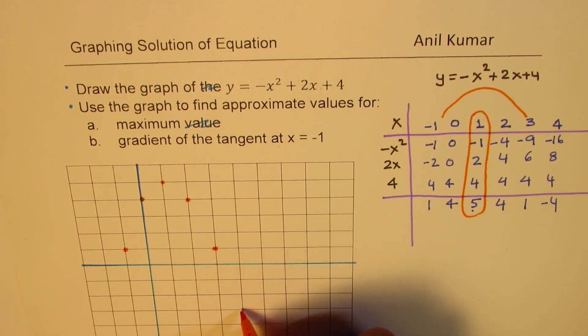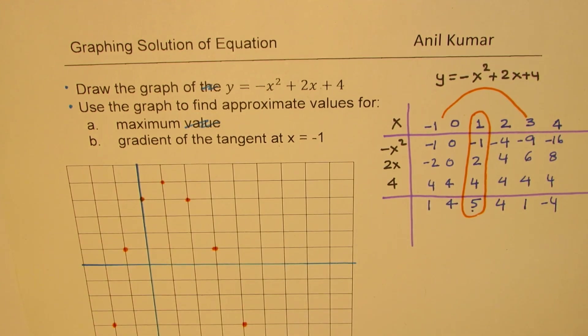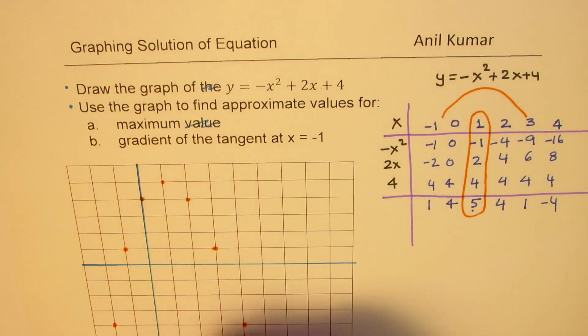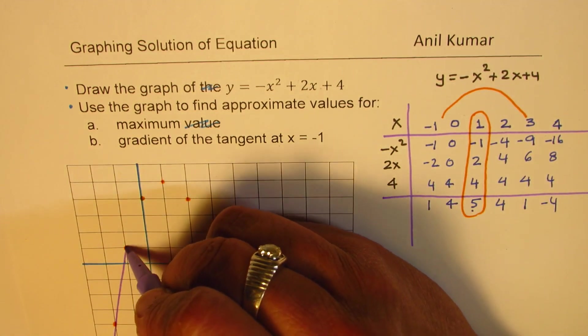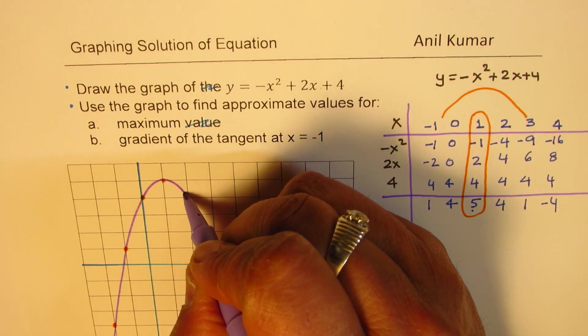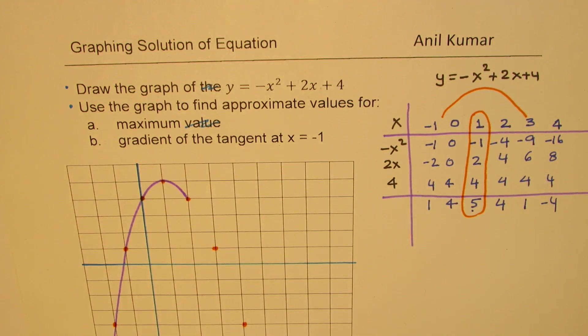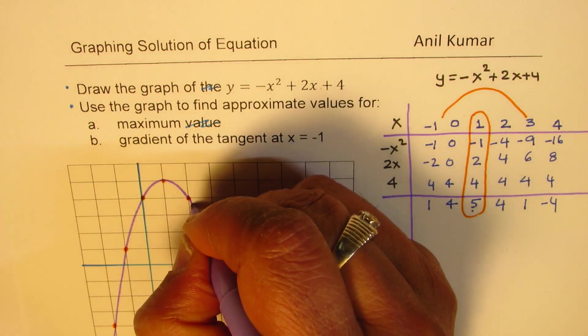And then, we have minus 4. So, 1, 2, 3, 4. We can also place this point at minus 4. That gives you the graph. We can actually sketch this parabola, moving upwards, kind of like this. Smooth curve. And then, we'll go down in this fashion. So, we have this graph.